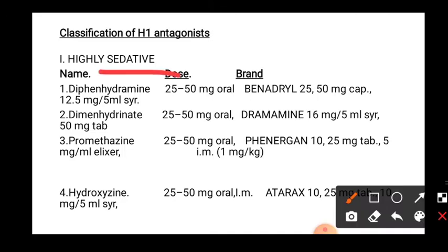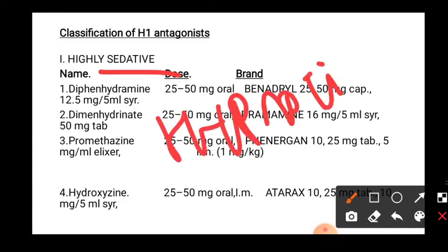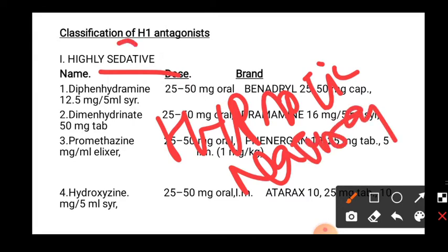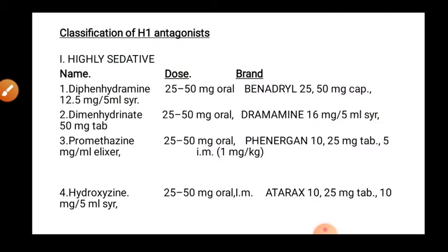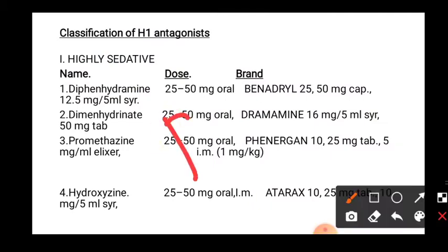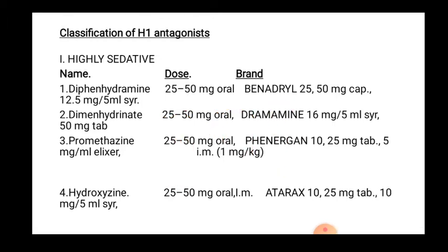An alternative term is hypnotic, which means providing natural sleep — drowsiness and brain depression. This drug category is highly able to cross the blood-brain barrier. An example drug in this category is diphenhydramine, with a basic dose of 25–50 mg.